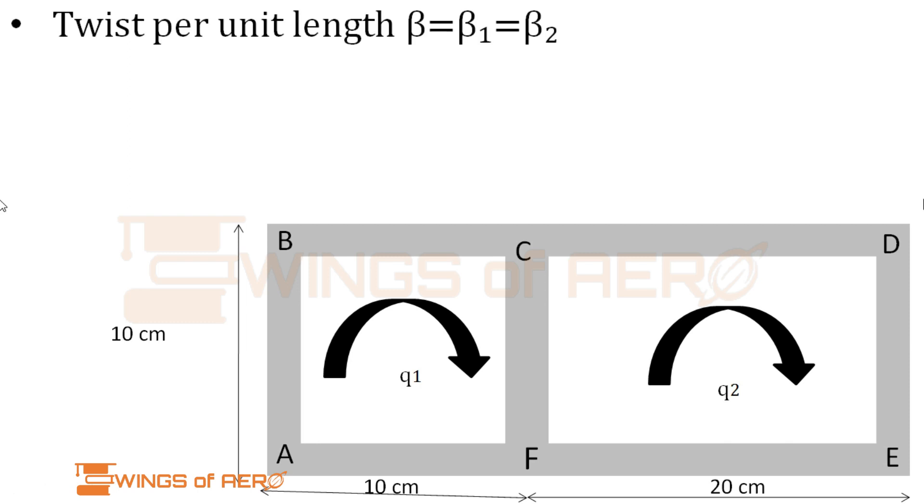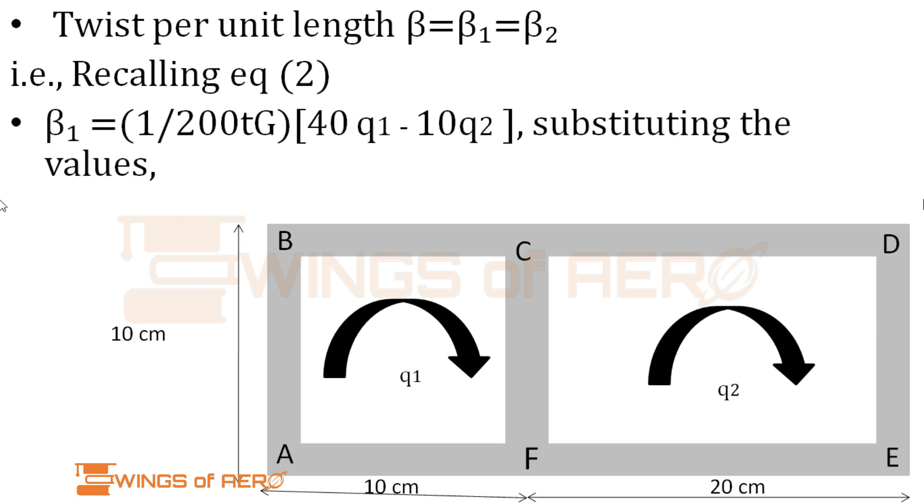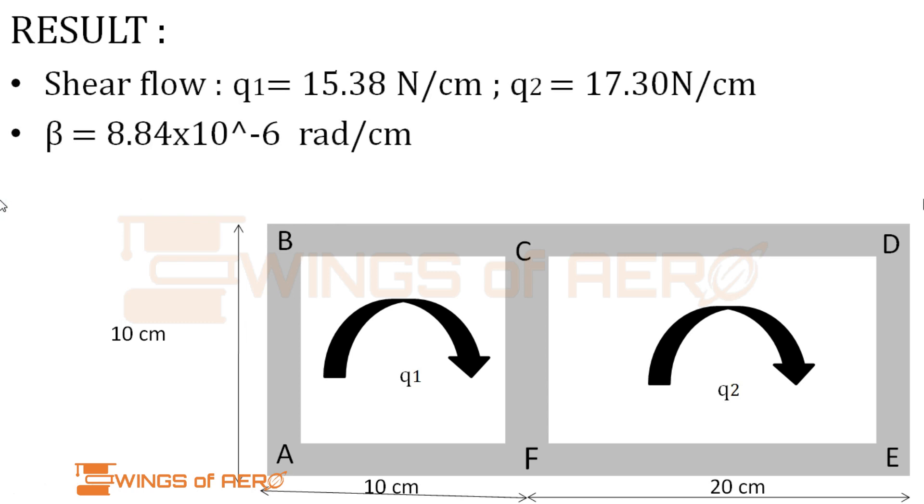Another thing we have to find is twist per unit length. Twist per unit length is the same in cell 1 as well as cell 2, denoted by the letter beta. Take equation 2: beta 1 equals 1 by 200tG, 40q1 minus 10q2. Substituting the values of q1 and q2, we get beta equals 8.84 into 10 power minus 6 radian per centimeter. As per our question, we've obtained both the shear flow at q1 and q2 as well as the twist per unit length beta. This is the shear flow diagram for this multi-cell structure.